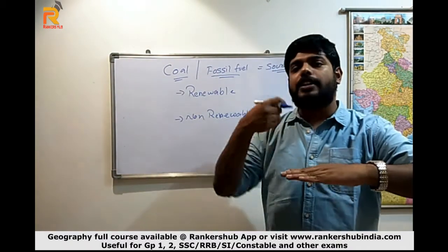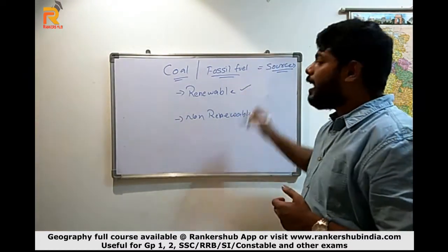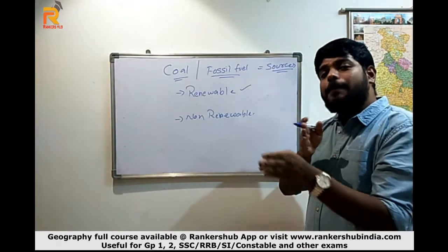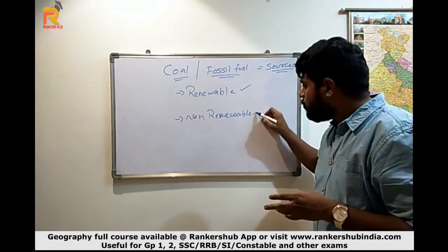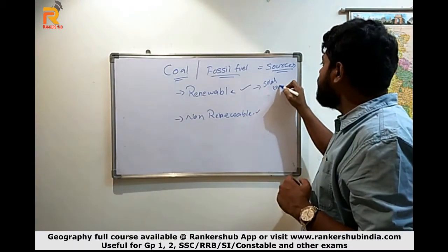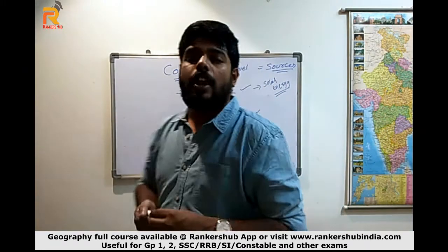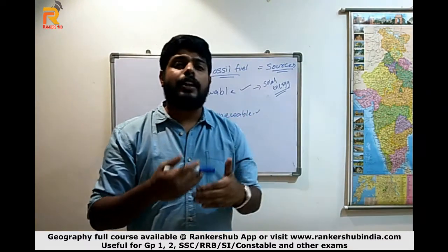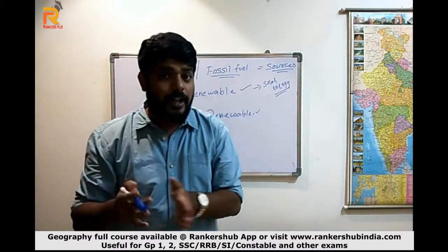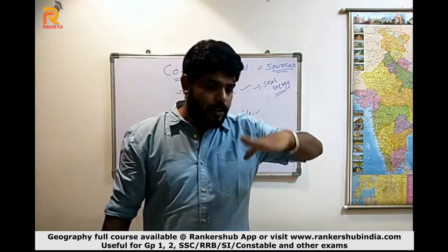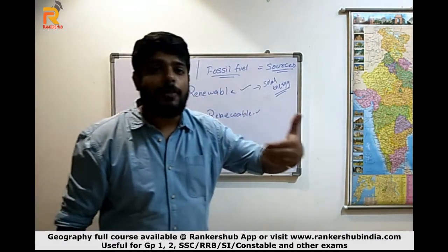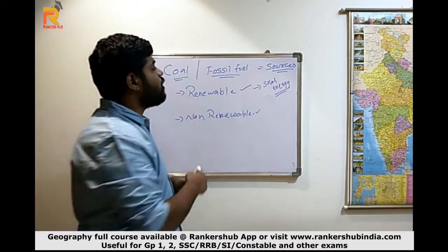A renewable source means if I use something and it is automatically generated again, that will be called as renewable - which are generated again. Those which are not generated again, if I use it one time and it is gone - completely exhausted - those are called non-renewable. Those which are not exhausting, that means developing again, will be called as renewable. The example of renewable source is solar energy. The major source for solar energy is the sun.